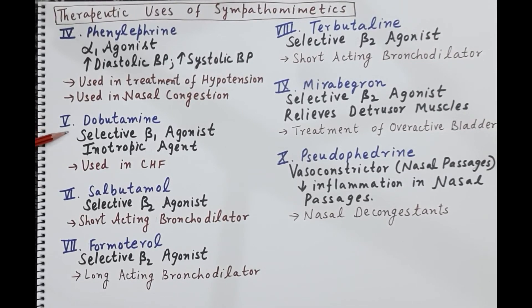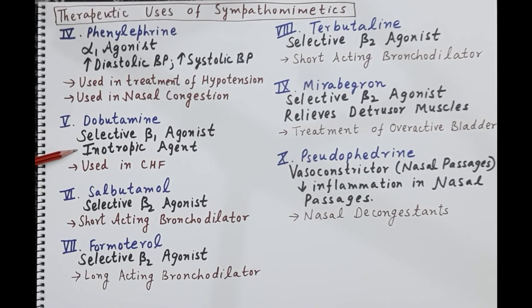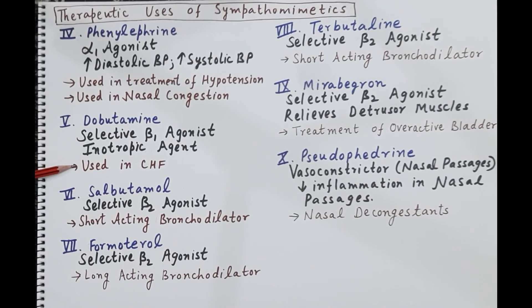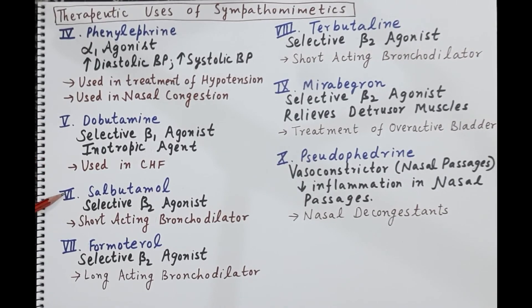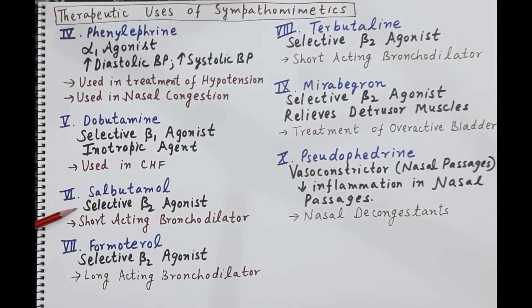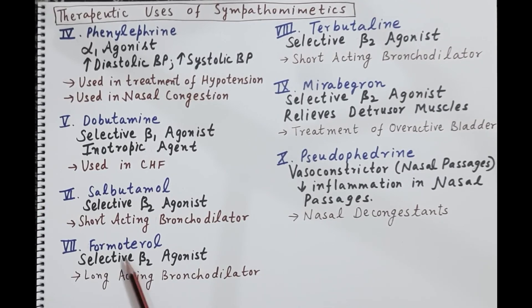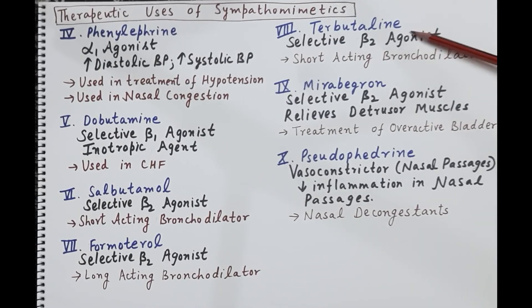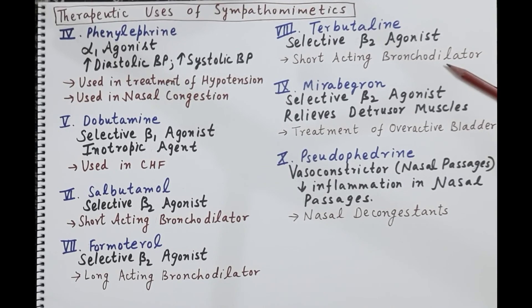Dobutamine is a selective beta 1 agonist. It binds to beta 1 receptors on the heart, producing a positive inotropic effect — increasing force of cardiac muscle contraction and cardiac output — making it useful in treatment of congestive heart failure. Salbutamol is a selective beta 2 agonist that causes bronchodilation and is used as a short-acting bronchodilator. Formoterol is also a selective beta 2 agonist causing bronchodilation, used as a long-acting bronchodilator. Terbutaline is likewise a selective beta 2 agonist, producing bronchodilation, used as a short-acting bronchodilator.